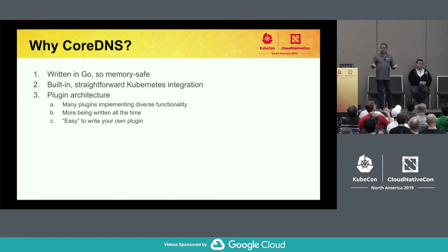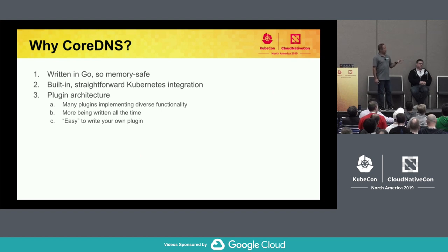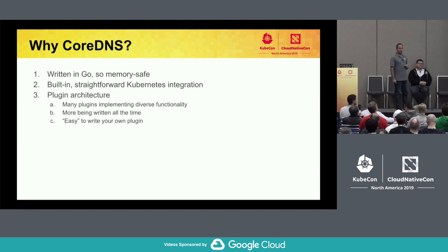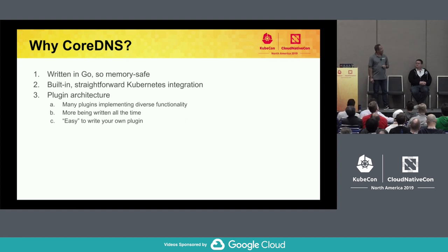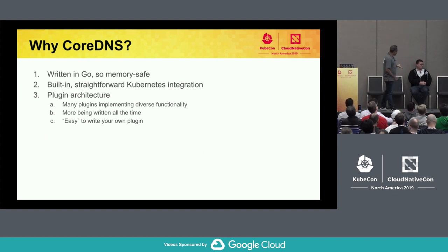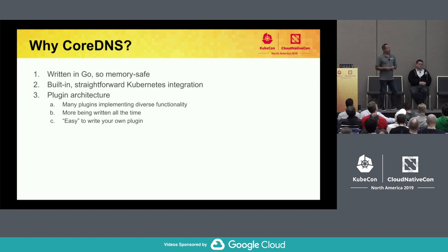Some of you may be thinking: why do I need a new DNS server? Why CoreDNS versus the old kubeDNS? One reason is that CoreDNS is written entirely in Go, so it is memory safe. It has built-in, very straightforward Kubernetes integration. It has a rich plug-in architecture and ecosystem. More plug-ins are being written all the time — we just checked in the policy plug-in, a major enhancement that allows you to call out to OPA to make policy decisions within your DNS server.